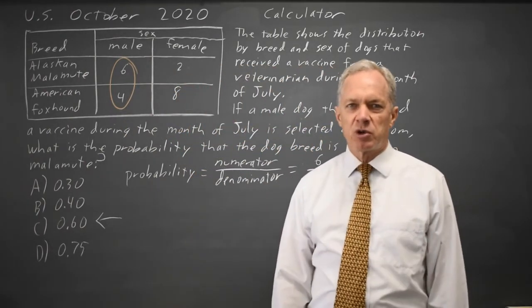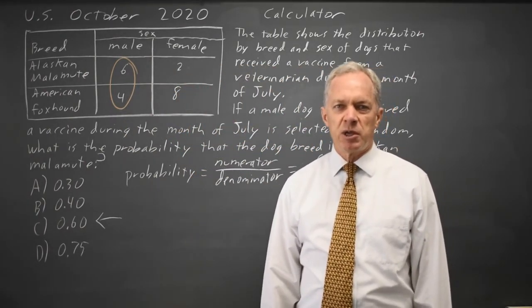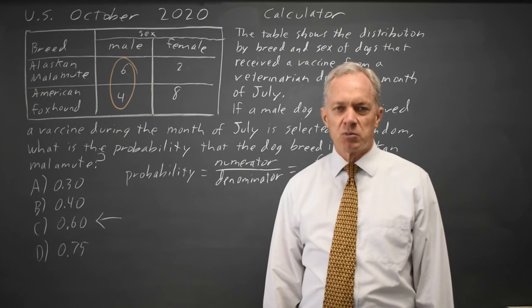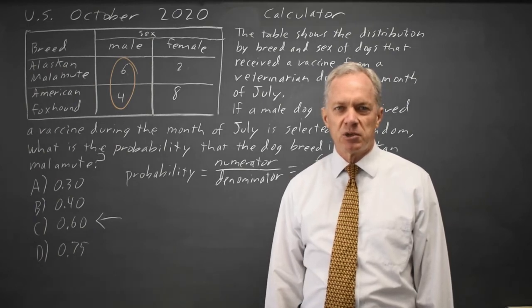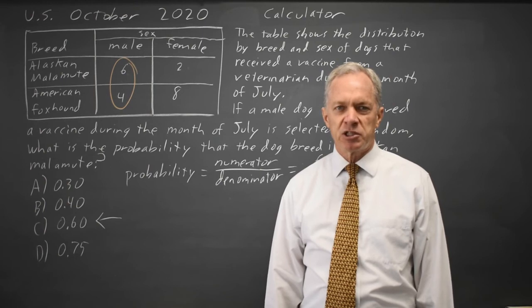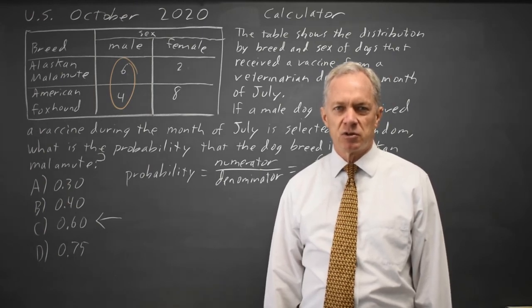When College Board asks for probabilities from a table, they may want one or more rows, one or more columns, or the entire table, and you have to read the question very carefully to make sure your answer is the answer to their question.